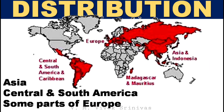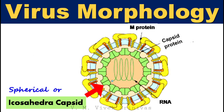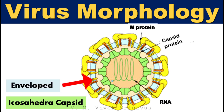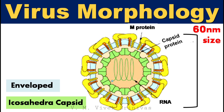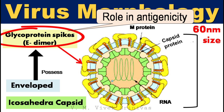This infection is prevalent in Asia, Central and South America, and parts of Europe. Regarding virus morphology, this virus possesses a spherical, icosahedral capsid, covered with a lipid envelope. The entire virus is about 60 nanometers in diameter. This lipid envelope is studded with glycoprotein spikes, which are immunodominant proteins that play a major role in antigenicity as virus-neutralizing antigens.